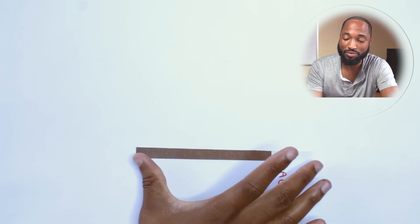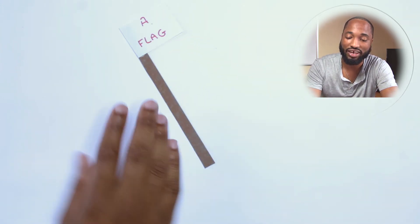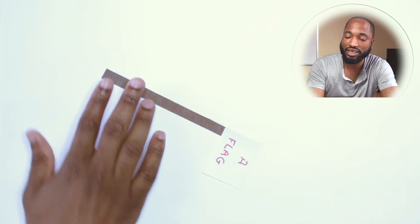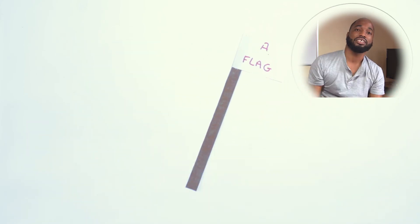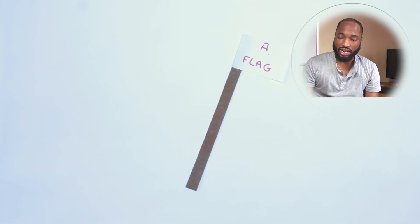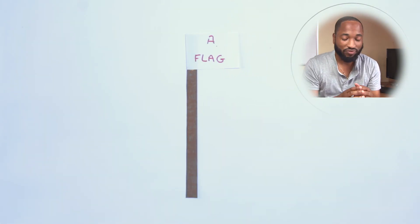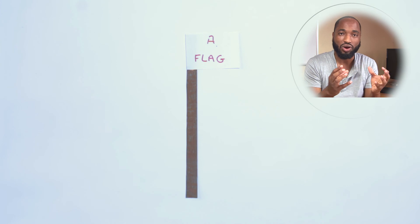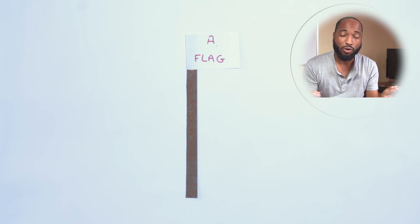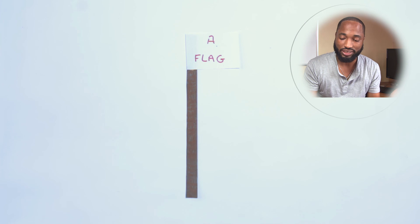It still remains 10 meters. It doesn't matter which direction the flag is in, it will still have a length of 10 meters. So the absolute value is useful in mathematics for situations like that, where you just want the absolute value, you just want the actual amplitude or magnitude of the quantity.